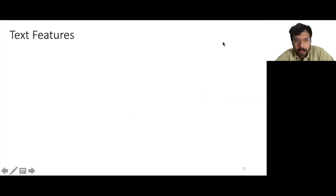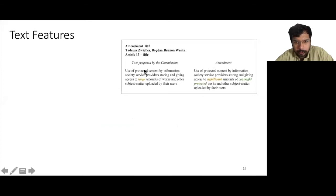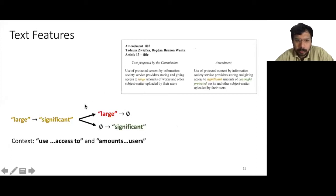To understand how the text features are extracted, let us consider an example. Let's consider the first edit of Amendment 803 that we saw earlier. This edit replaces the word large by significant. We consider the deleted text and the inserted text of this edit.